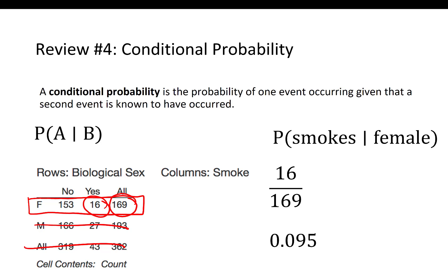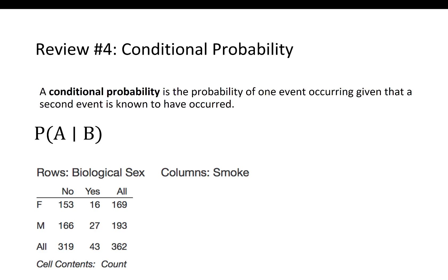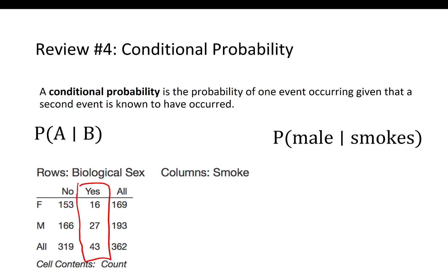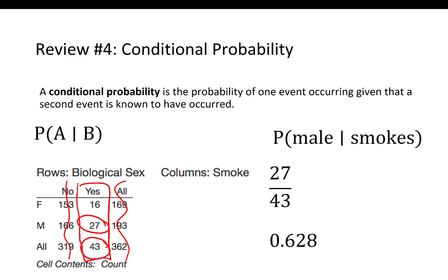Let's do one more example. What is the probability that someone is male given that they smoke? We're only interested in the smokers. Of the 43 smokers in this sample, 27 were male. So 27 over 43 gives us a conditional probability of 0.628.